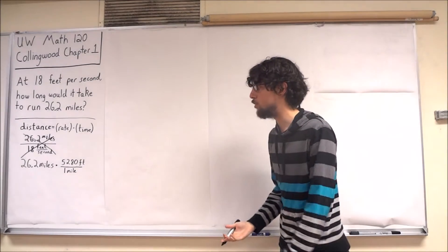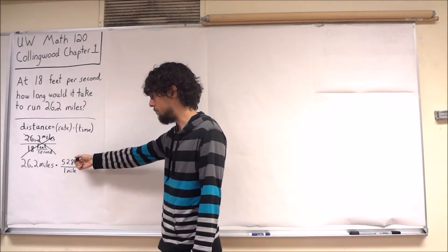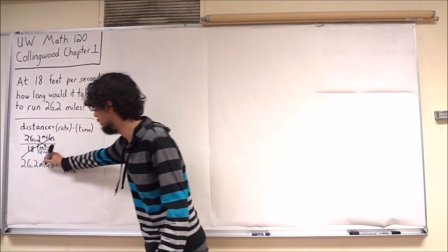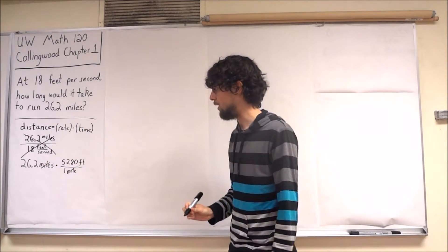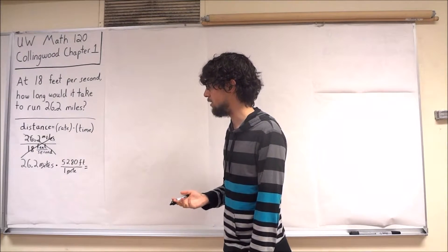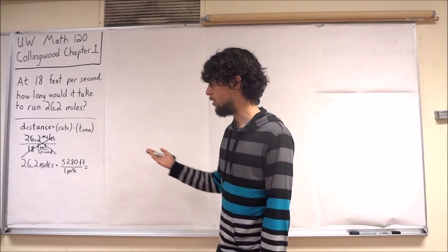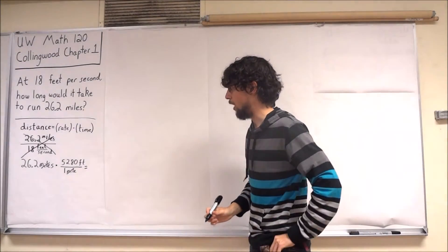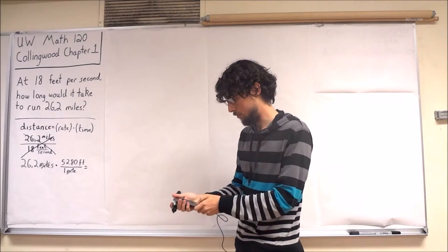So 26.2 miles times 1 is equal to, my miles cancel, and I can see how many feet this is. I'll write it underneath. Let me grab a calculator and actually do the computation.